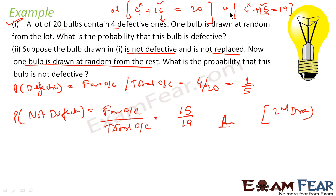Please note: in cases where one item is drawn from a lot and it is not replaced, create a new scenario — a new lot — and then apply the probability formula on that new lot.